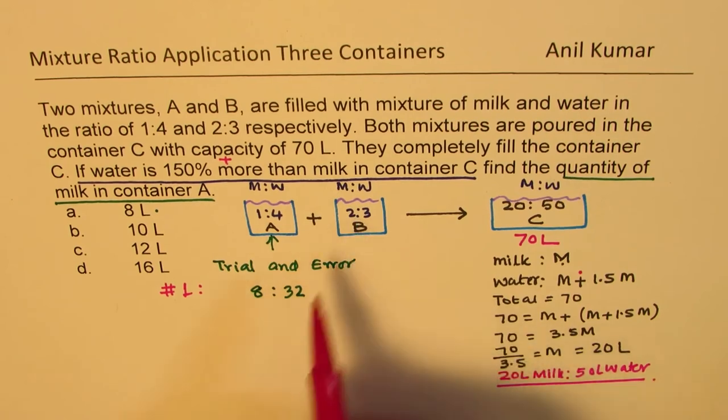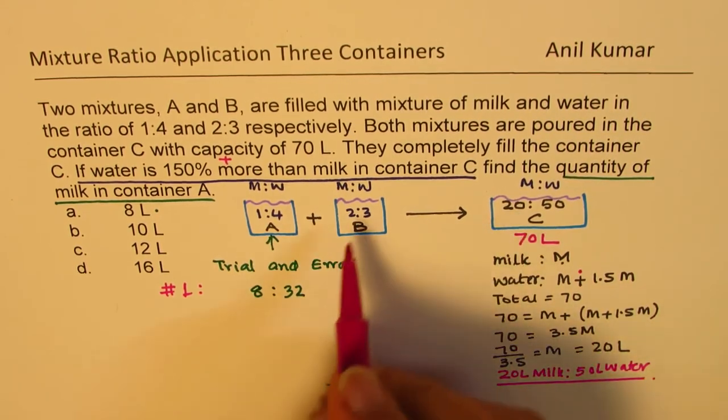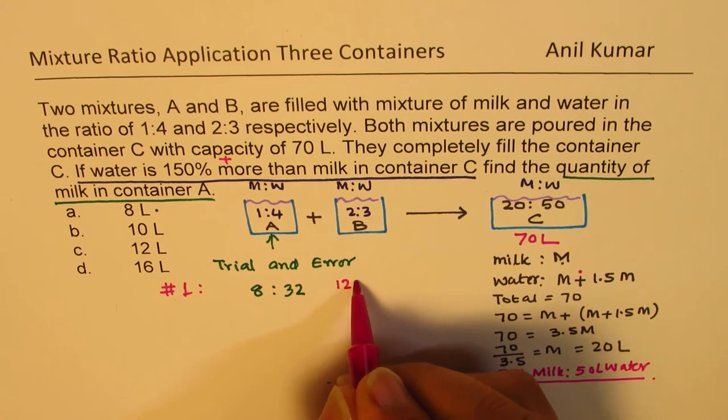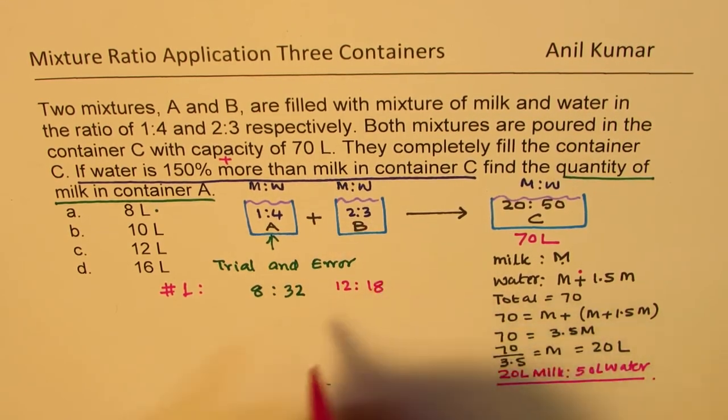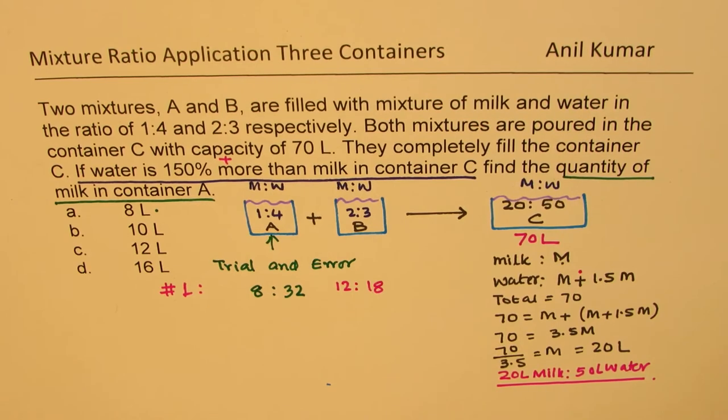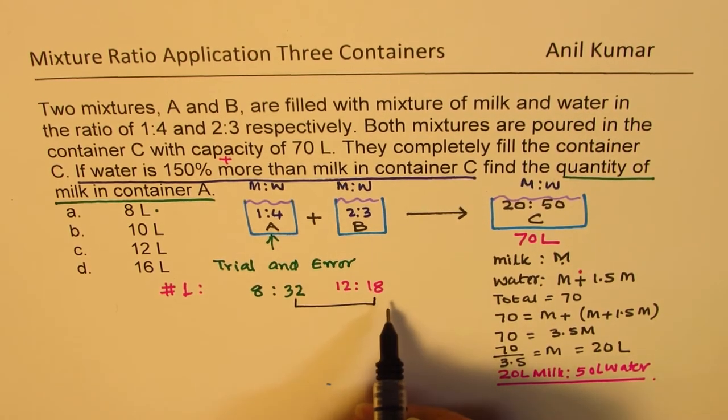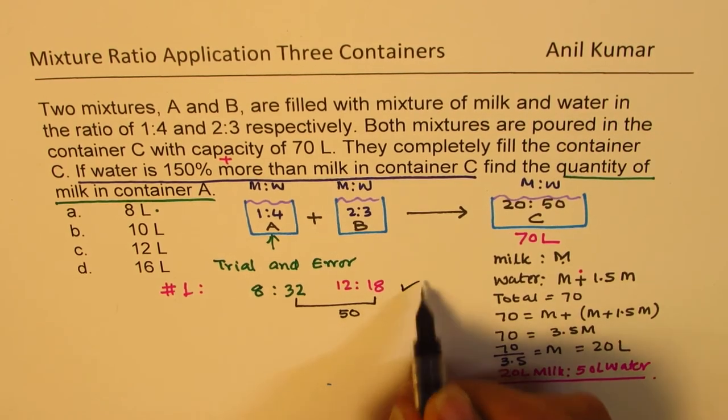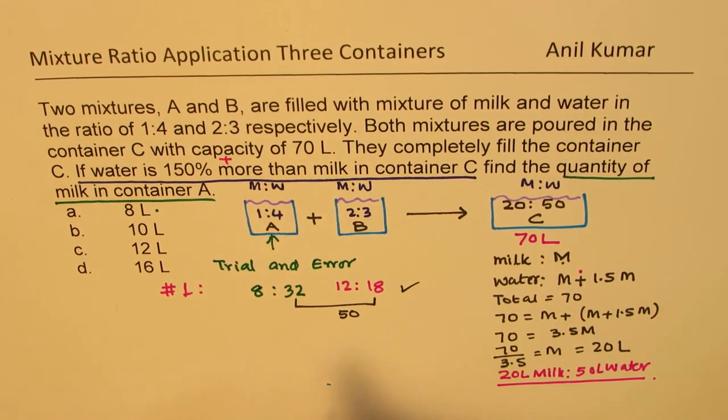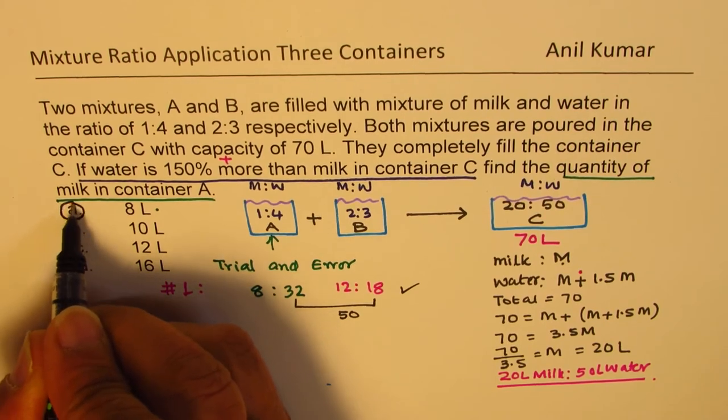And in this case, since we have total of 20, balance left is 12. 12 will be 6 times, we get 18 here. Now you can clearly see that this total is 50. That means it works. Therefore, option A is the right option.